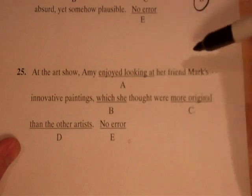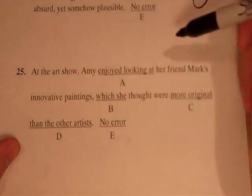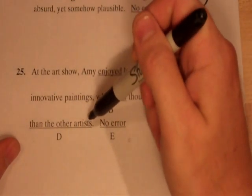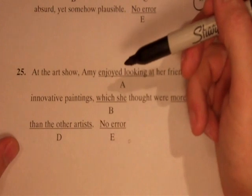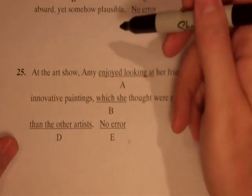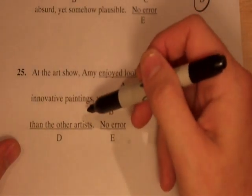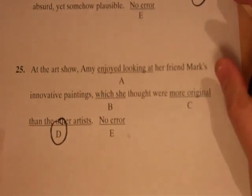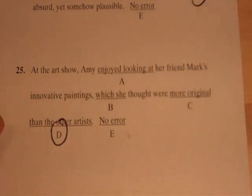'Were more original' — we're comparing something. Comparing paintings. But answer choice D is comparing paintings to artists. 'Which she thought were more original than the other artists' — this is what we call a faulty comparison. The sentence meant to say the paintings were more innovative than the paintings of other artists, but it set up a faulty comparison. It's not apples to apples. D is the correct answer. Quick rundown: we saw two subject-verb agreement errors and one faulty comparison — two big rules tested on the SAT.